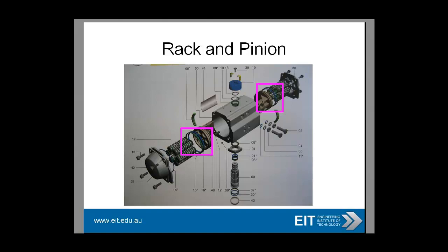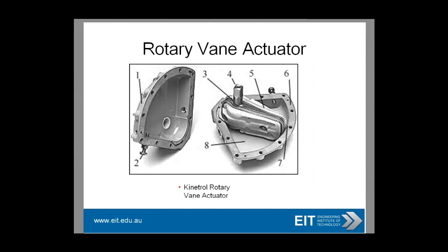These aren't the only pneumatic actuators. You can also get a rotary vane actuator, which is a good alternative to piston actuators, especially where high loads are encountered. There are no links or gears, but it is bulky and heavy. Maintenance problems occur more frequently than you'd like. It's a quarter-turn actuator — you can see the small amount of turn. You can get a fail-safe operation, though it occurs in a very limited range.